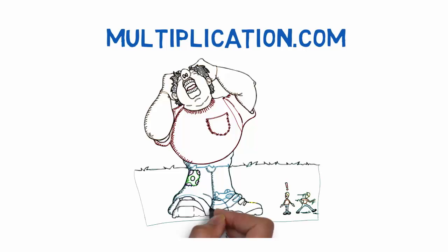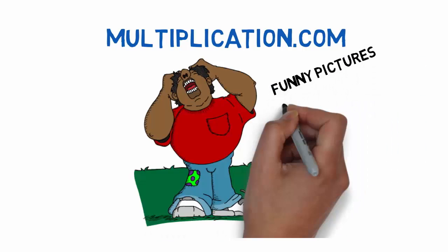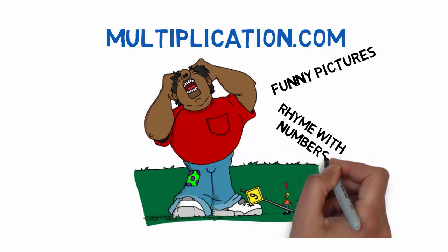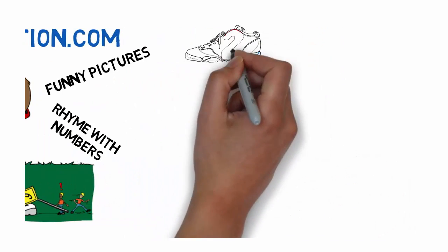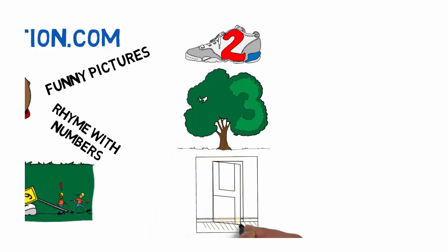Since pictures are easier to remember than numbers, in our system we use funny pictures that rhyme with numbers. For instance, we use shoe for two, tree for three, door for four. You get the picture.